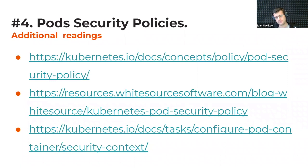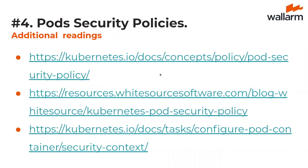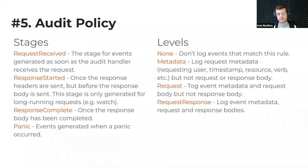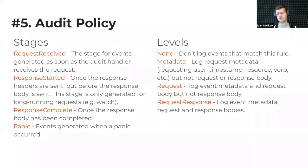Point number five is audit policy — more related to incident response, but it can actually prevent data breach. Audit policy can help you know about a data breach before attackers download a significant amount of data; you can stop breaches in real time using audit policies and prevention tools. There are two dimensions: stages (at which stage of request processing the event is triggered — request received, response started, response complete, or panic) and levels (none, metadata, request, request-response).